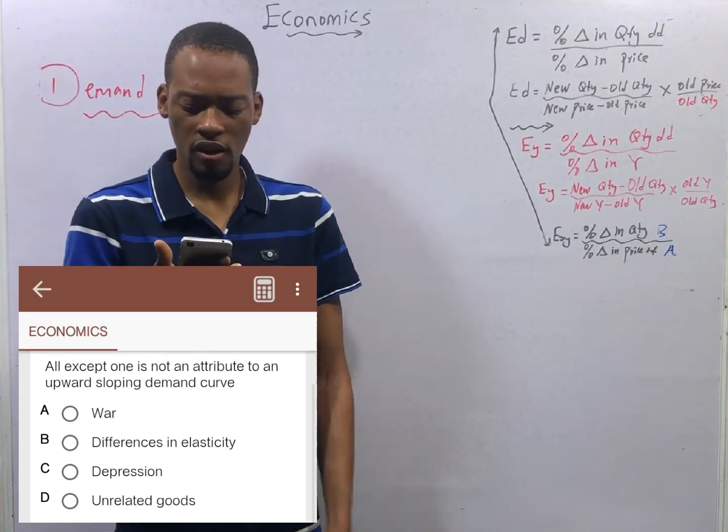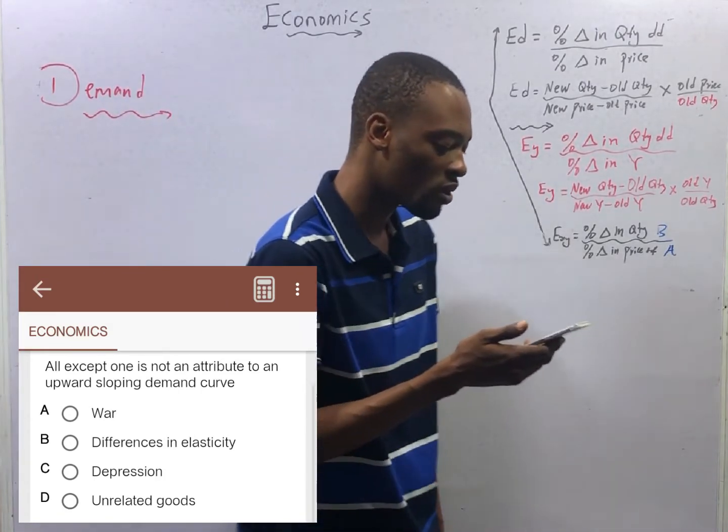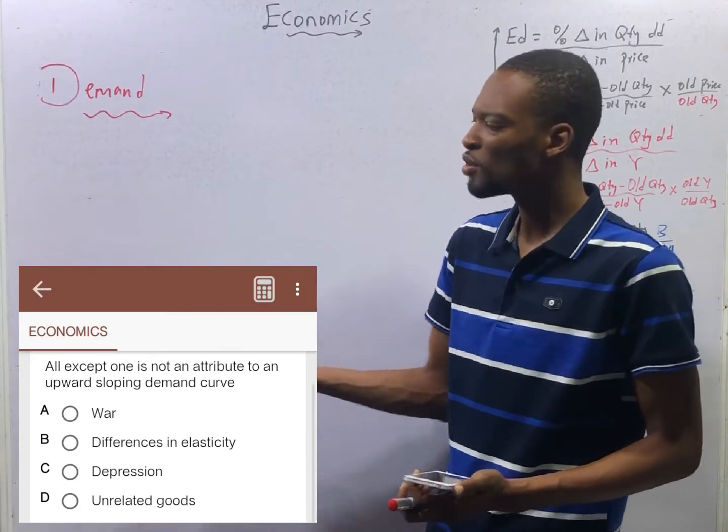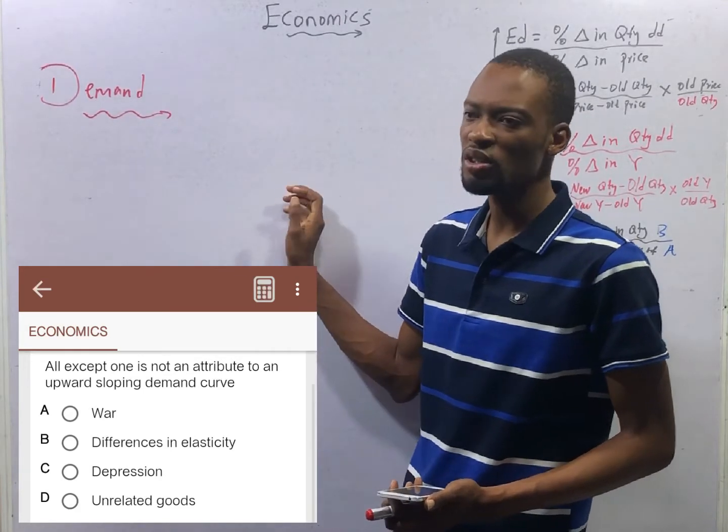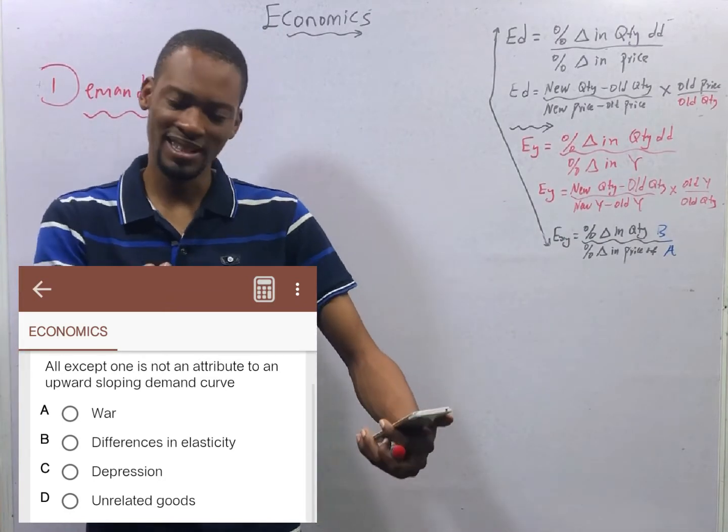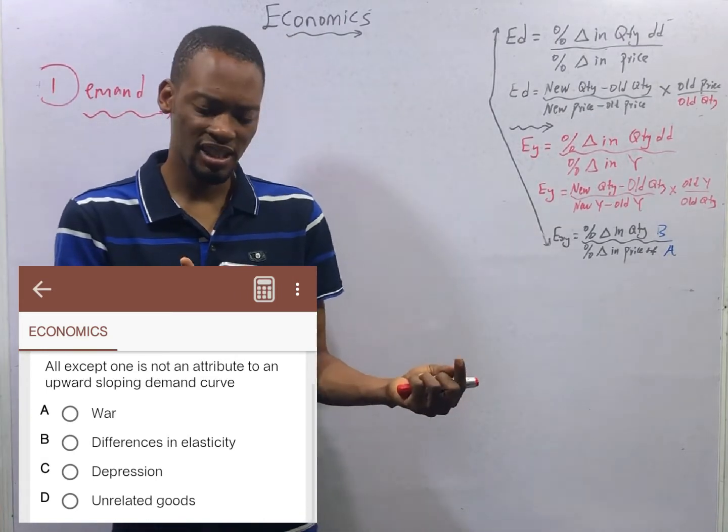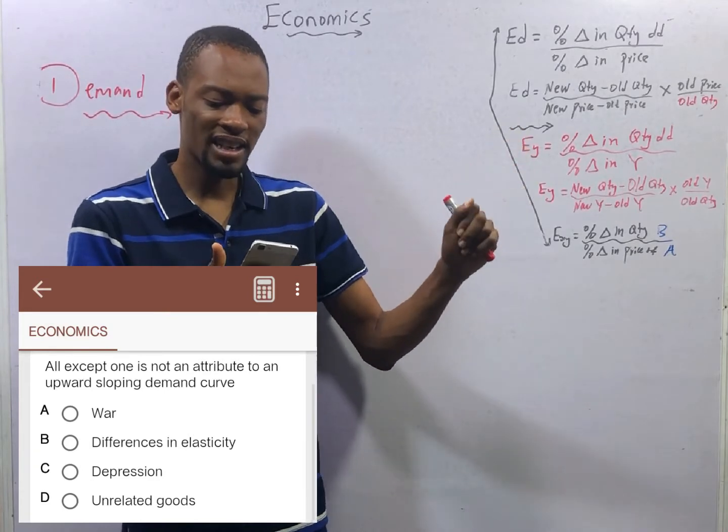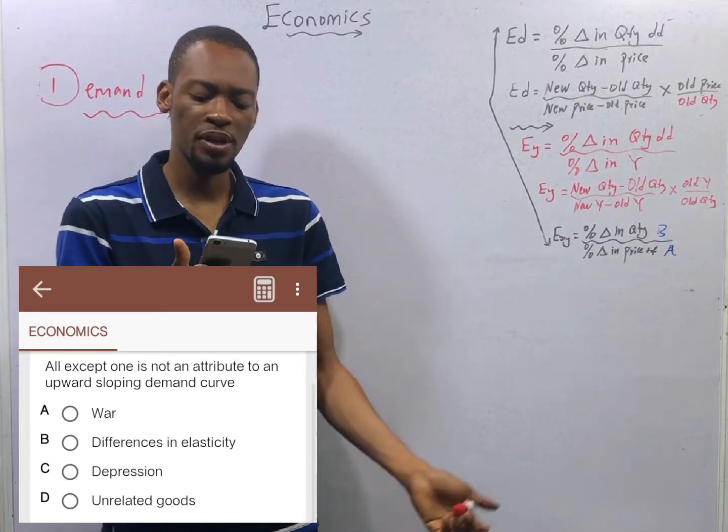Difference in elasticity, fear of future rise. Like, ah, since this one is going up now. Tomorrow, it may go higher. Let me just buy it now. So, fear is going up. You have to buy and keep despite the height in price. Because you might go there the next day, and the price has doubled. So, you buy as the price is generally going up. Which means, war, differences in elasticity and depression can make people buy goods while the price is increasing. Or, it is an attribute to an upward sloping demand.